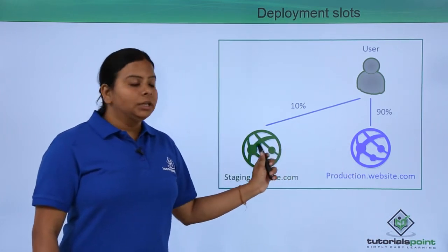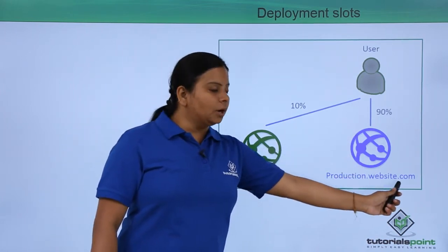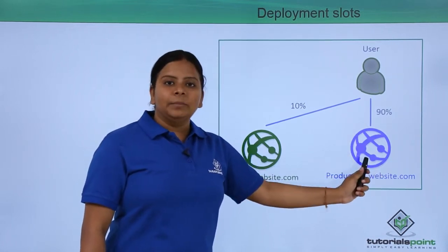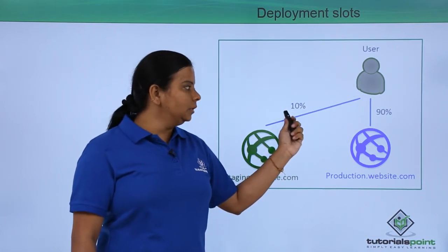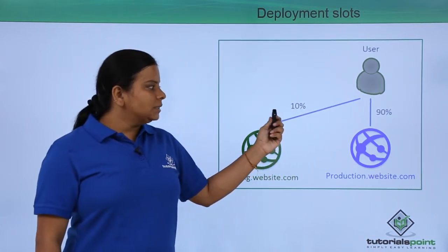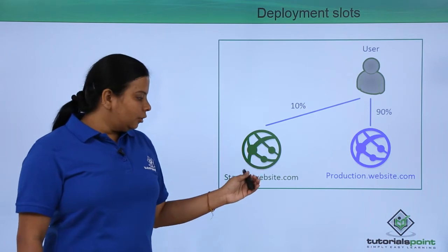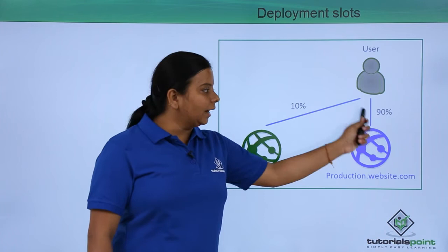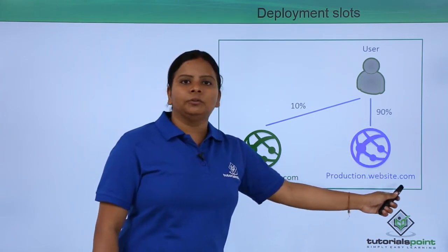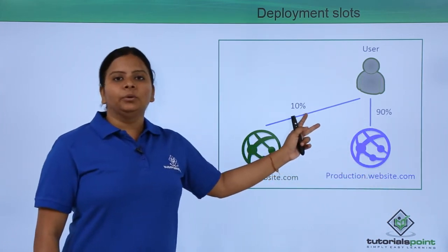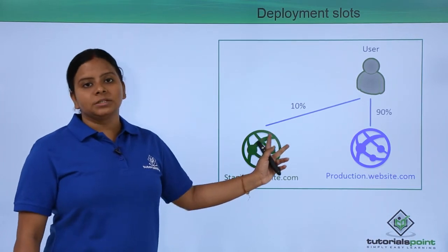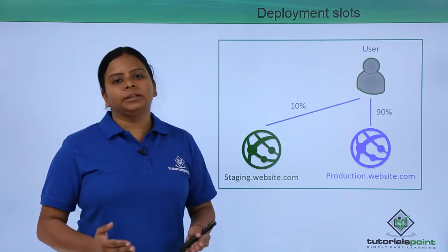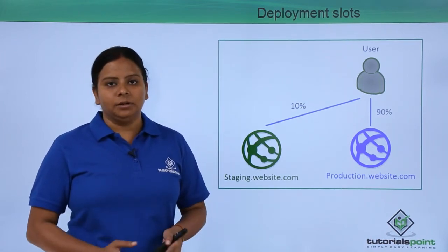For example, the old production.website.com slot can serve 90% of your users, while you deploy the same application to 10% of users via staging.website.com. This way you can create different deployment slots and divide the traffic within the same system, simply by routing users through different deployment slots.